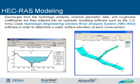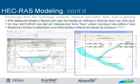Discharges from the hydrologic analysis, channel geometric data, and roughness coefficients are then entered into a hydraulic modeling software, such as the U.S. Army Corps Hydrologic Engineering Center's River Analysis System, or HECRAS, software, in order to determine the water surface elevation at each cross-section. The images on this slide illustrate an example of a cross-section with the water surface elevations.